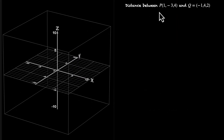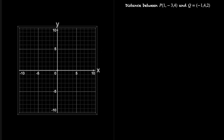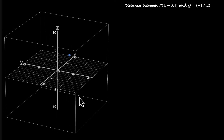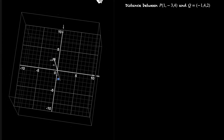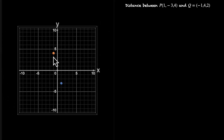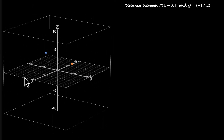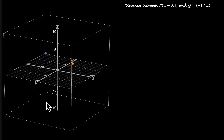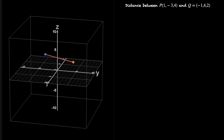Let's look at the first problem: distance between P(1, -3, 4) and Q(-1, 4, 2). We can use the distance formula or we can visualize these points. Let's visualize. P is 1 along the X axis, -3 along Y (going down), and then 4 up along the Z axis. Q is at -1, 4, and then 2 up along the Z axis. So these are our two points — blue is P and yellow is Q — and we need to find the length of the segment PQ.